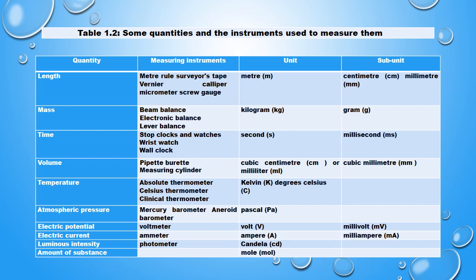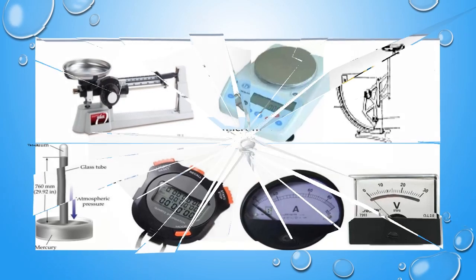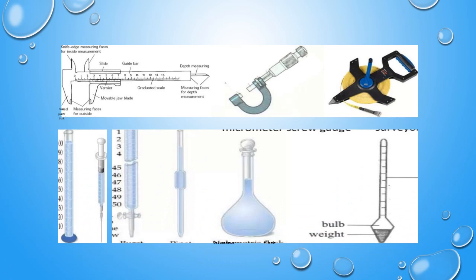Some of these measuring instruments include: the beam balance, electronic balance, lever balance, barometer, stopwatch, ammeter, voltmeter, calipers, micrometer screw gauge, surveyor's tape, graduated cylinder, syringe, burette, pipette, volumetric flask, and the hydrometer.